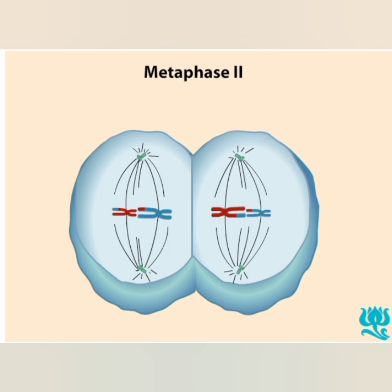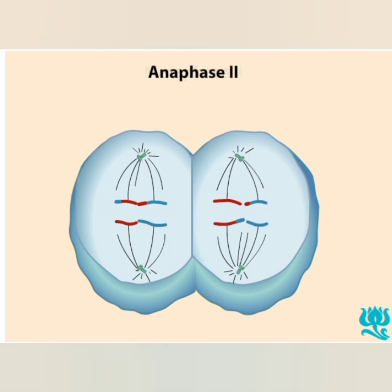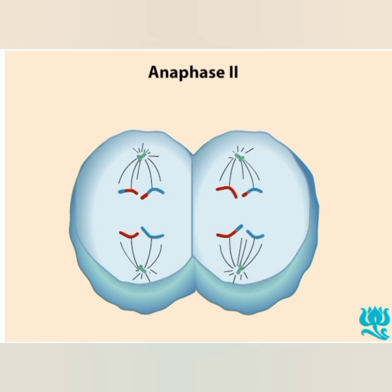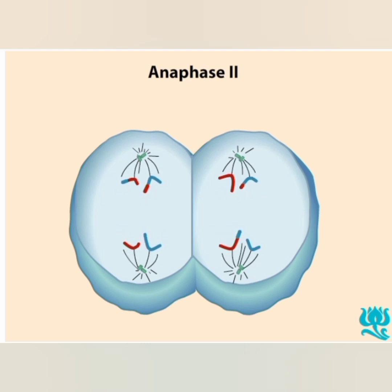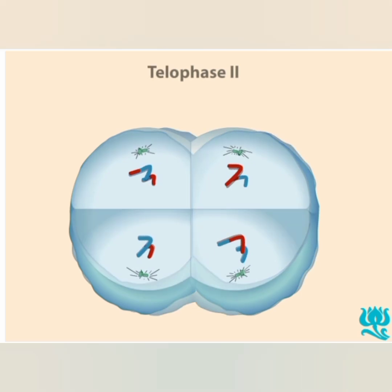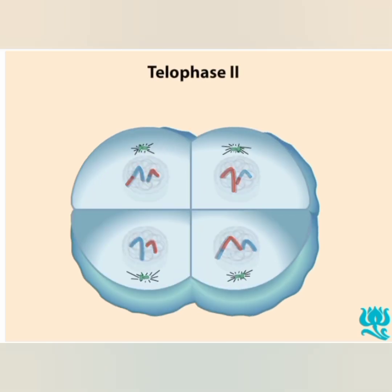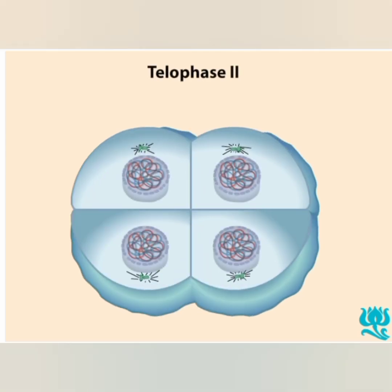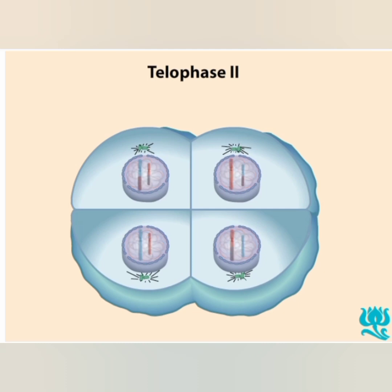During anaphase 2, the centromeres divide, and both chromatids become independent chromosomes and move to opposite poles of the cell. During telophase 2, chromosomes again decondense, and nuclear membranes reform. Depending on the species, cytokinesis may occur.